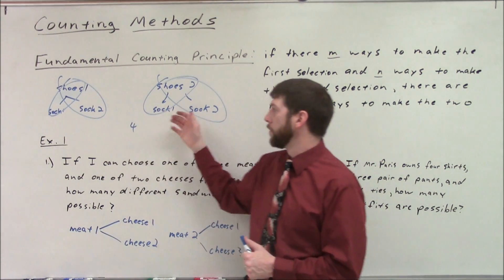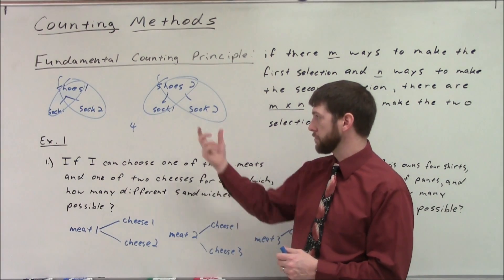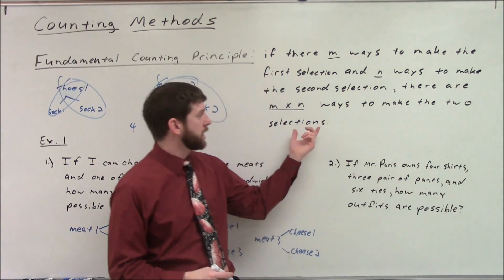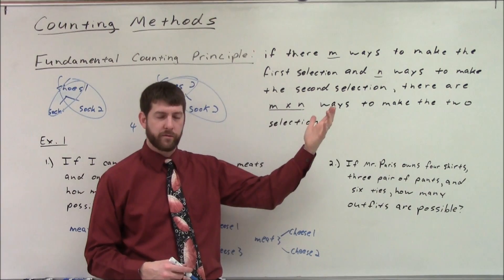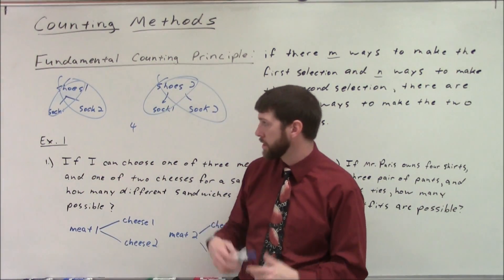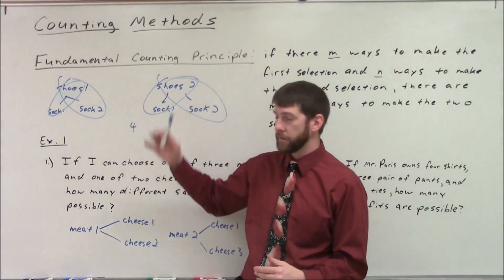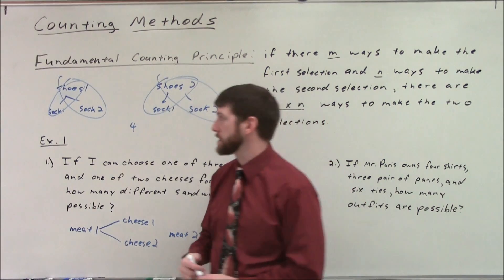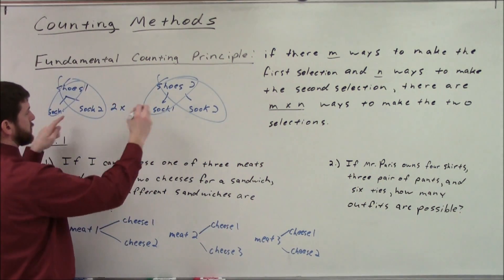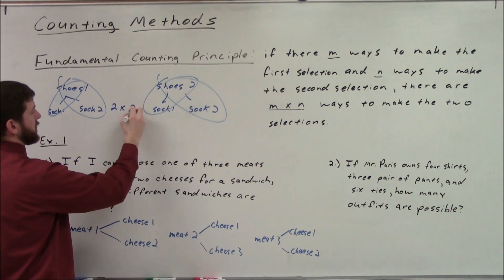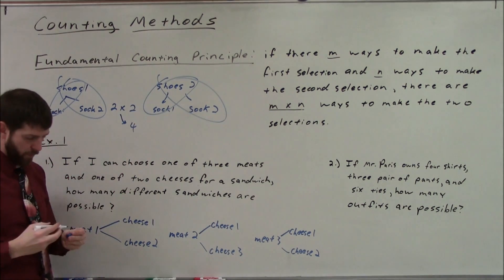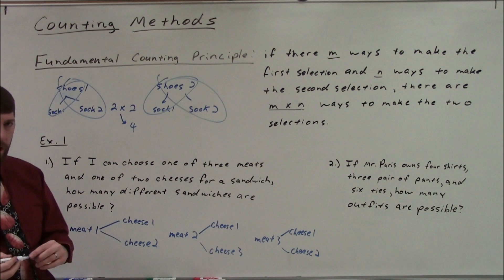Because that gets really complicated when you start throwing in large values or more than two sets of items, we use the idea of just multiplying the number of choices for the first selection by the number of choices for the second. I could have saved myself a lot of drawing by saying: two pairs of shoes times two pairs of socks — two times two is four.